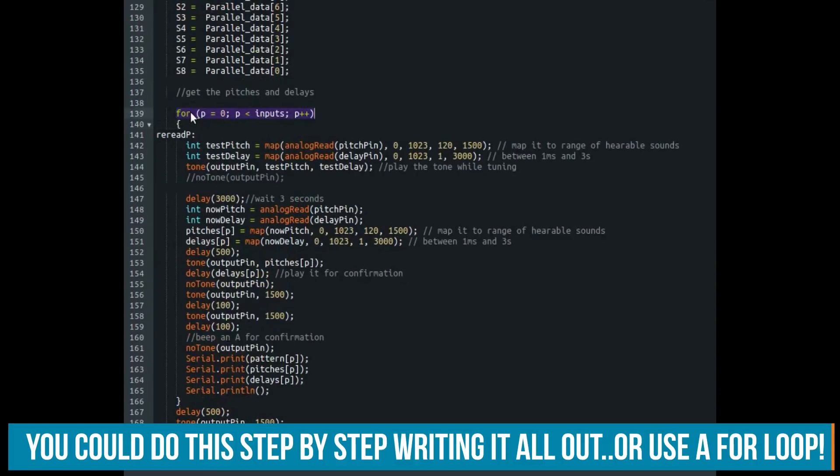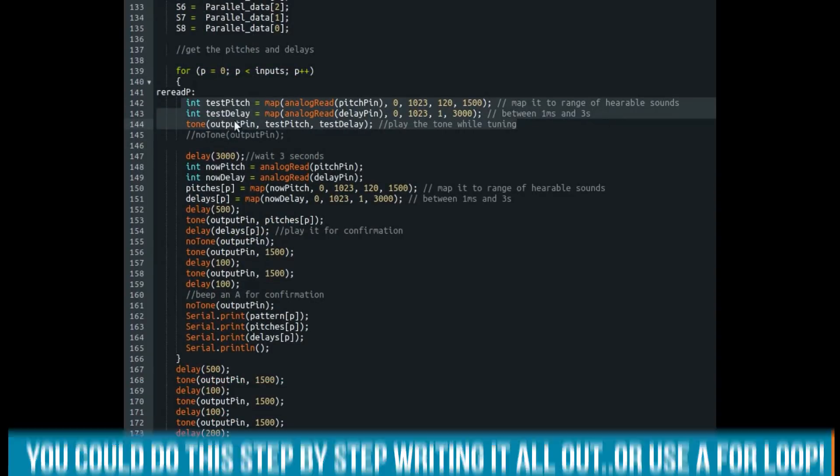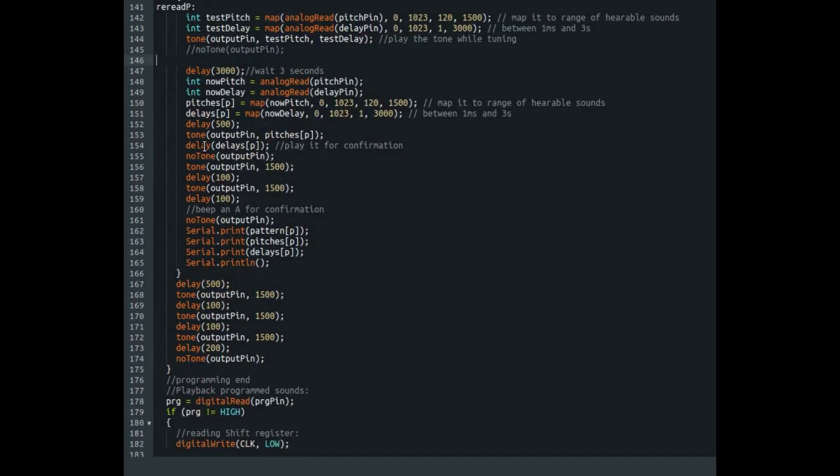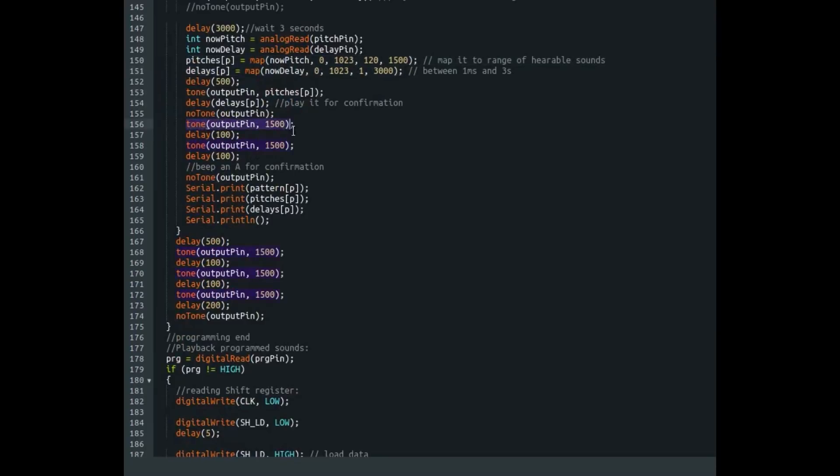And then it will read all the pitches that we set. So we get into a for loop, read our potentiometers, and give us that tone. If we stay on the tone for three seconds, it will then read it again, map it to a usable range, and save it to that range. And that is confirmed with a double beep.